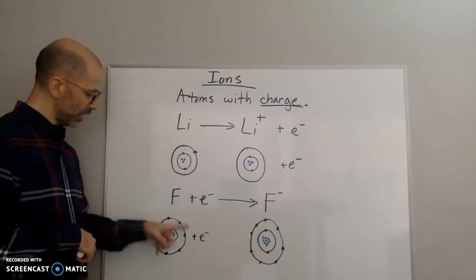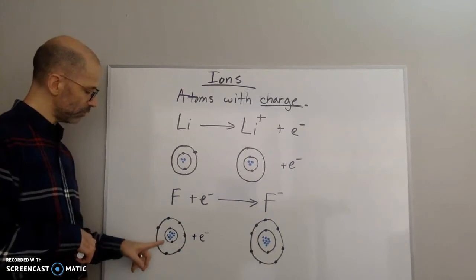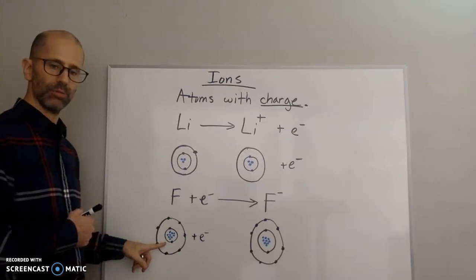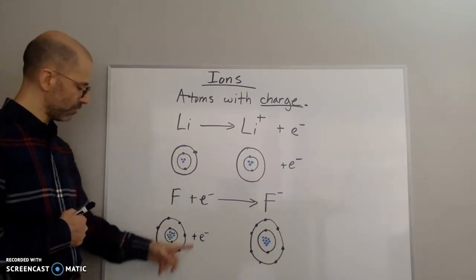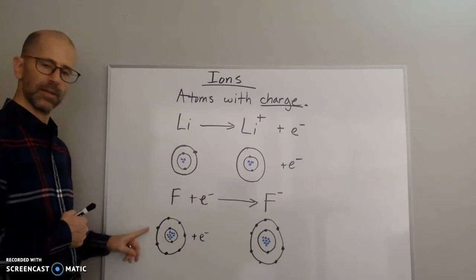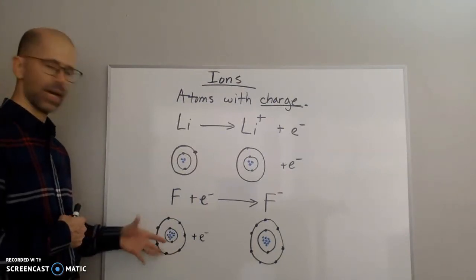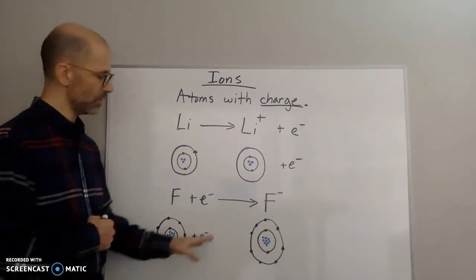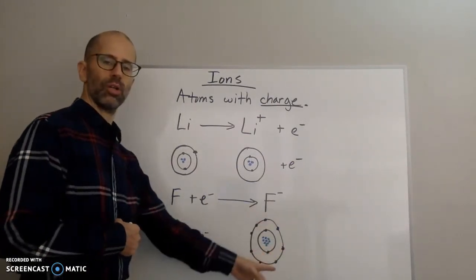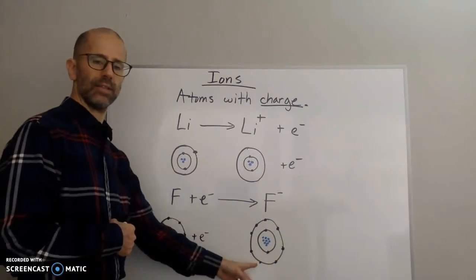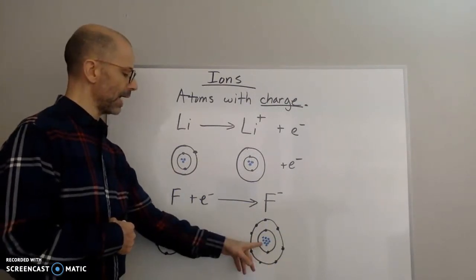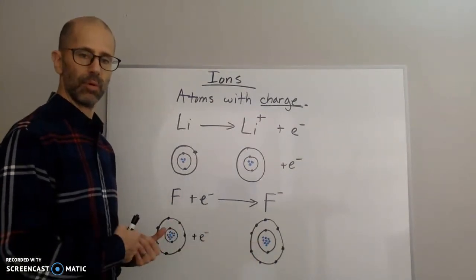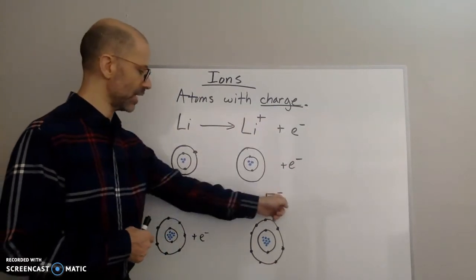In our neutral atom of fluorine, we have nine protons — the atomic number of fluorine is nine — and we have nine electrons. Nine electrons and nine protons means zero charge. It gains one electron, so now it has a total of 10 electrons and nine protons. It has one more electron than protons, so it has a negative charge.